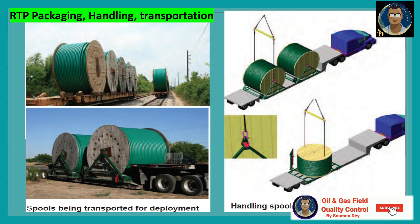Caution: RTP wound on spools has some stored energy. Ensure that the pipe end is restrained during all operations to avoid rapid release of the energy and potential injury to personnel and damage to the pipe and equipment. Handling of RTP will normally be deployed to location already on the spool equipment, which eliminates the need for any local handling. In cases where this is not possible or practical, it may be necessary to handle individual spools of RTP. Care must be taken as spools of pipe tend to be top heavy and can overturn. A manufacturer representative must always be on location when spools of pipe are handled.